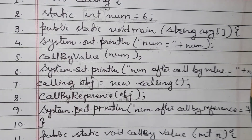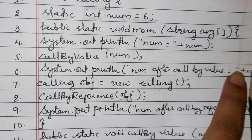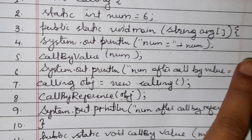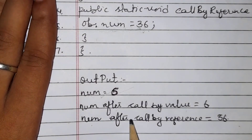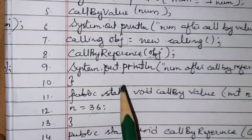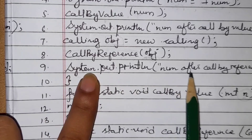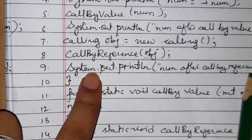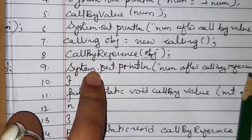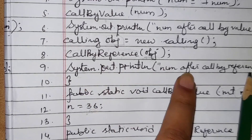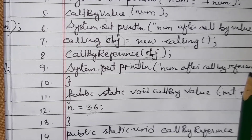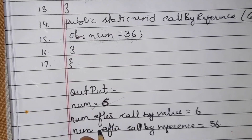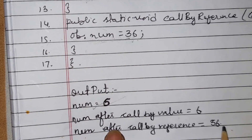In call by value, only the local copy changes — when printing, the static actual value remains the same. The last output is 'num after callByReference'. As told, the variable inside the object is changed to 36, so the output is 'num after callByReference = 36'.